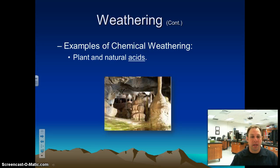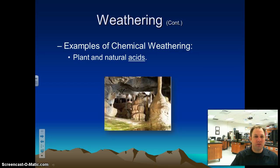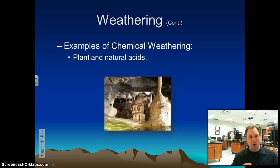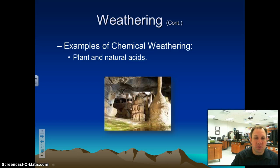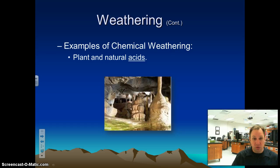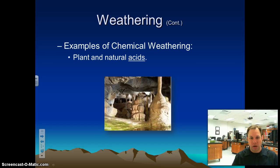Chemical weathering can also be done by plants and natural acids. Cave formations, for example — different types of acids moving through the ground start to erode that limestone and break it down in caves. So that's chemical weathering by natural acids. These are things we find naturally in nature, but they cause the chemical bonds in rocks to come apart and dissolve and disintegrate rocks.